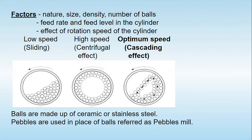If you want to understand how size reduction takes place in a ball mill, it depends upon a number of factors. The most important factor is the ball itself — what type of balls we are taking, what is the size of the ball, what is the density (meaning the material the balls are made of), and the number of balls present inside the cylinder.